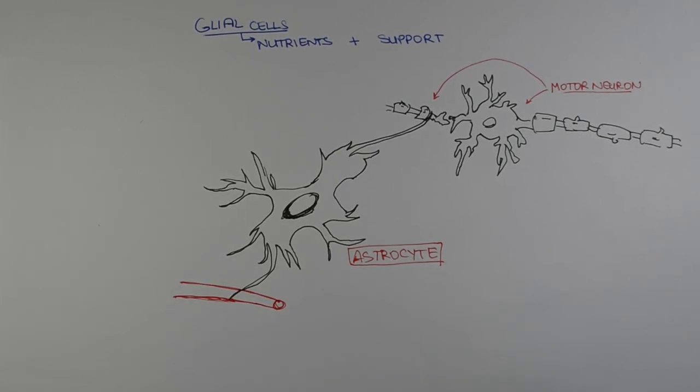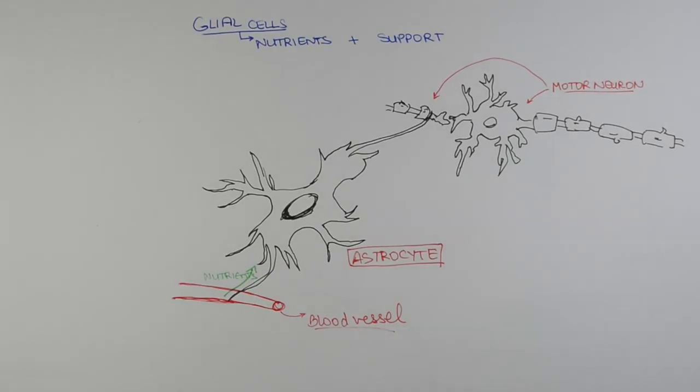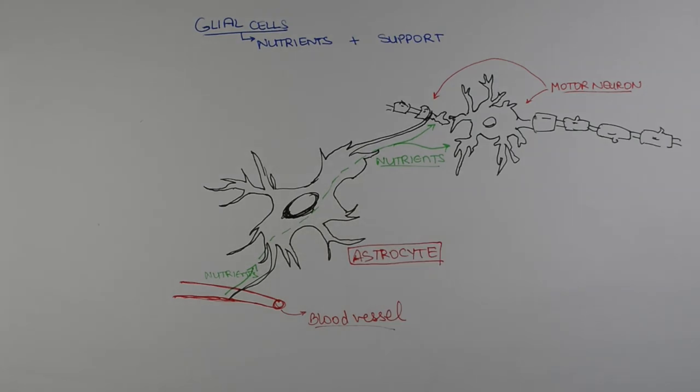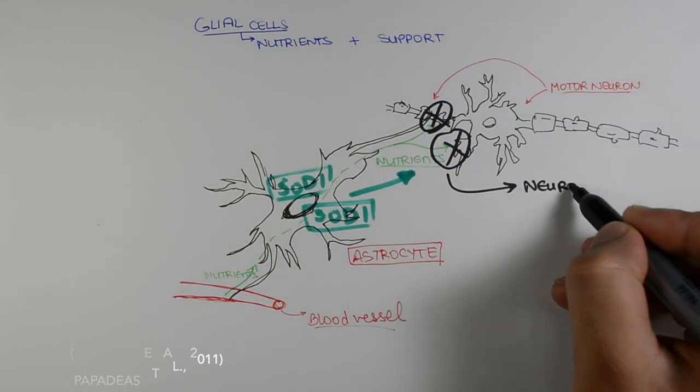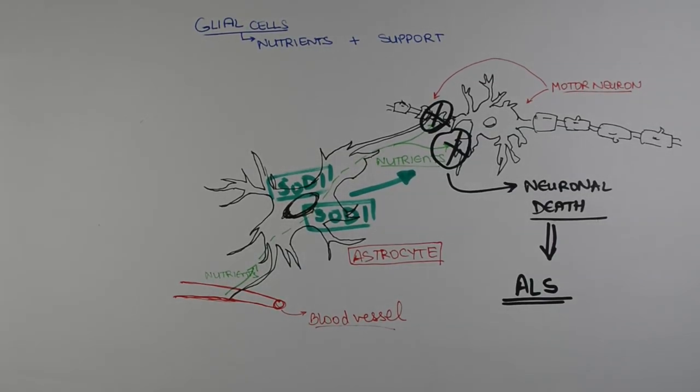Astrocytes are one type of glial cell which are involved in repair and support of neurons. There are five times as many astrocytes as neurons within our body. It has been shown that astrocytes producing a non-function variant of a protein called SOD1 can cause the death of normal motor neurons within the body, which can lead to the development of ALS.